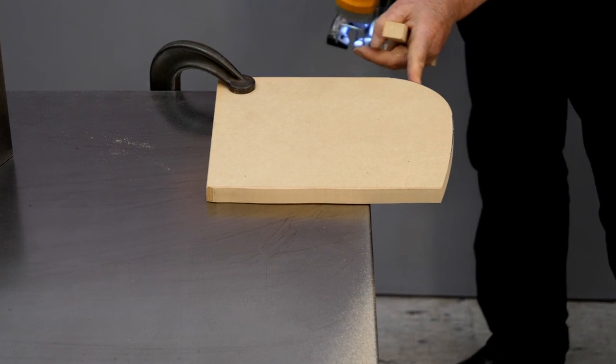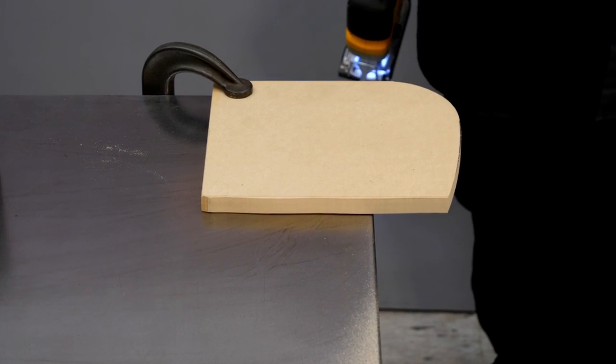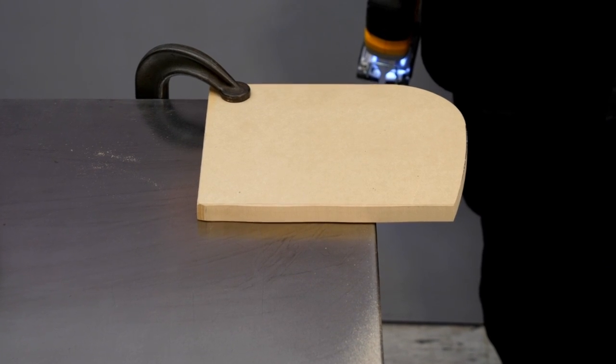I'll sand the edge of this to smooth it up, then I'll bend a piece of quarter inch rod around this form, and see how well that matches our template.